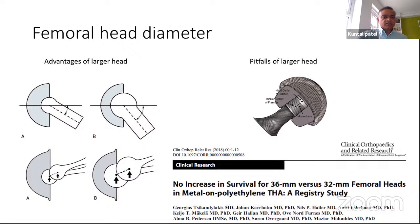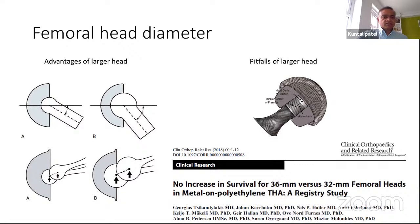Femoral head diameter is one of the most important factors the surgeon decides during surgery. It affects the head-neck diameter, sliding distance, and jump distance — in theory, the larger the head size, the more stable the hip. However, with a larger head there is increased torque and thereby increased risk of trunnionosis, and also increased risk of poly wear.